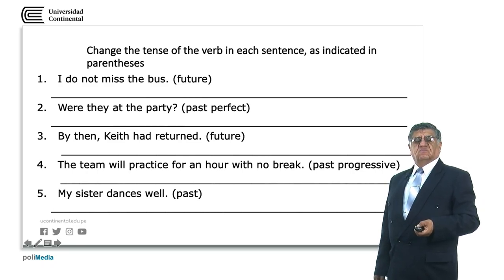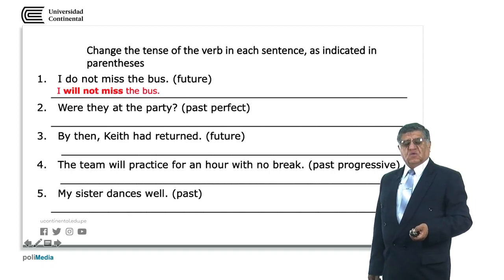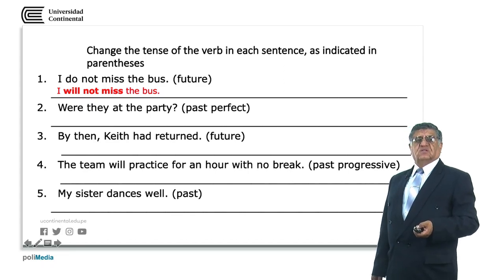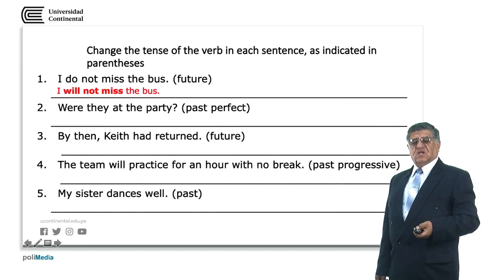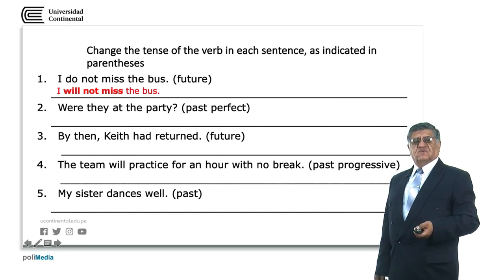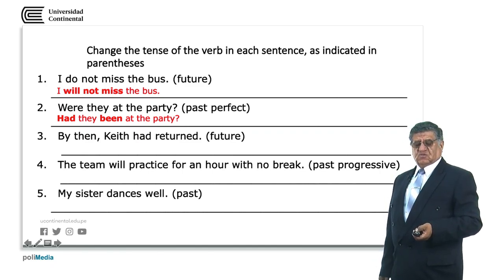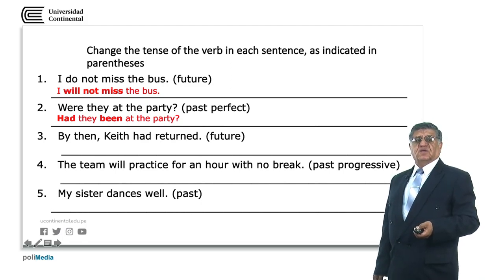For number one, I do not miss the past becomes I will not miss the past — we use the auxiliary and the negative particle with the simple form of the verb. For number two, where were they at the party becomes, in the past perfect, had they been at the party — had is the auxiliary, being is the past participle form of the verb to be. We changed both the form of the verb and its location in the sentence.